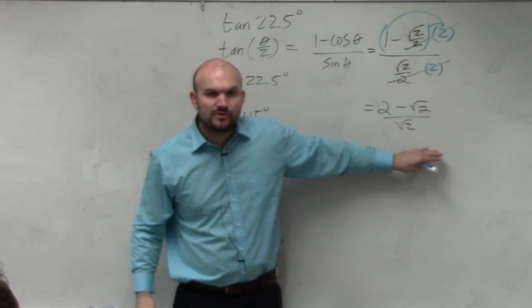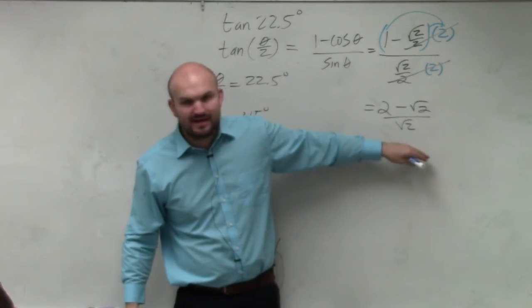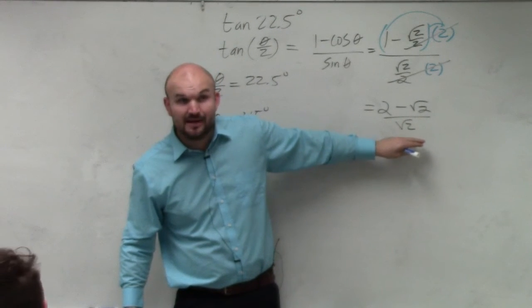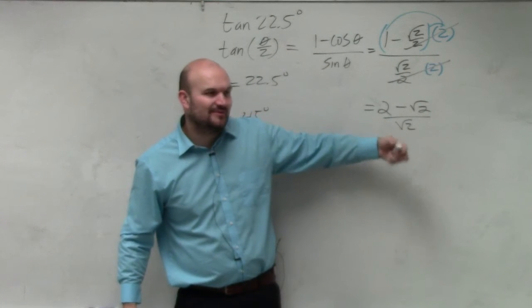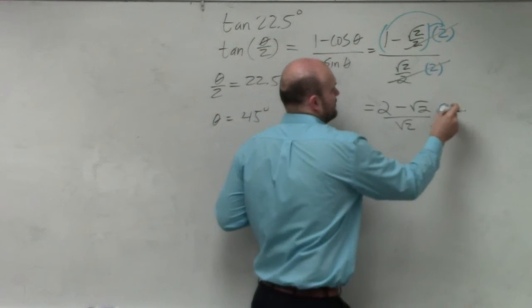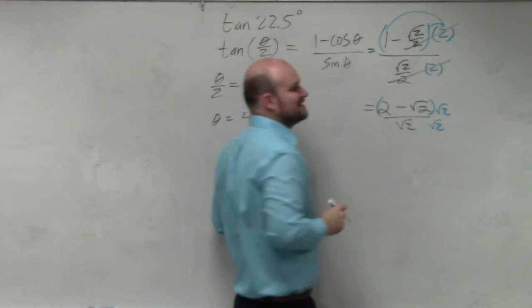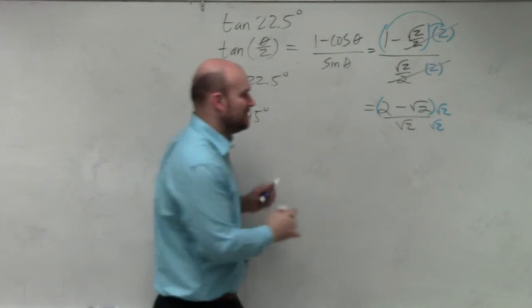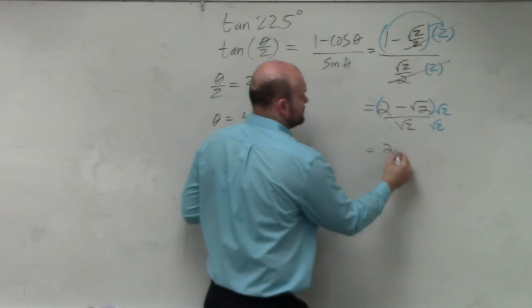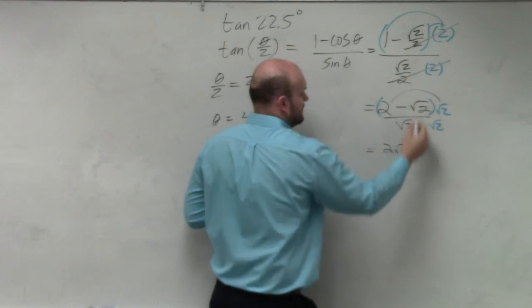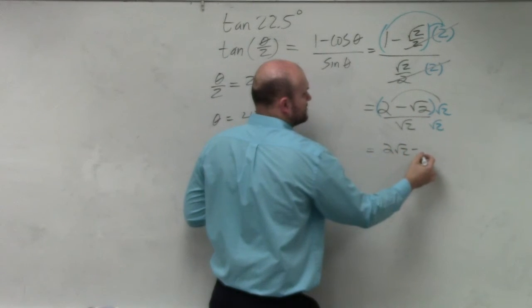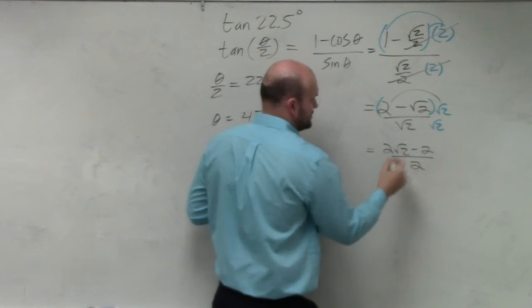Now we're dividing by √2. We don't want to have a simplified answer with √2 in the denominator, so we need to rationalize the denominator. You multiply by √2 over √2 in both numerator and denominator. That gives us 2√2 minus (√2)², which is 2, all over 2.